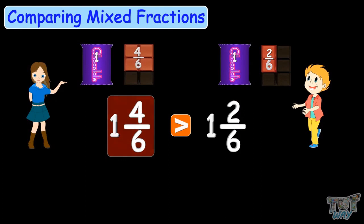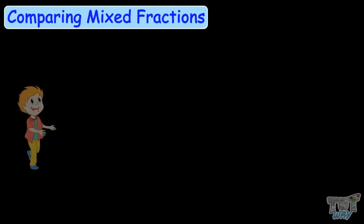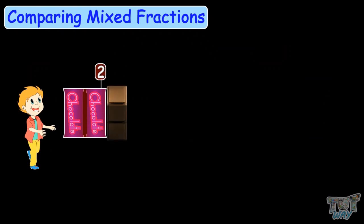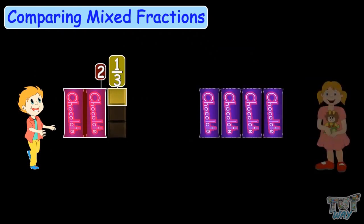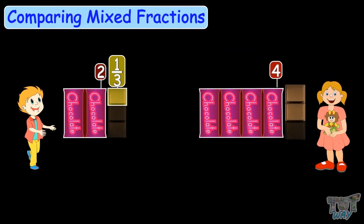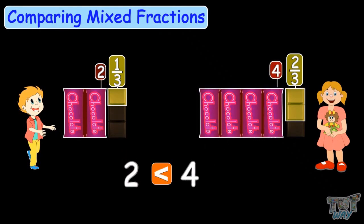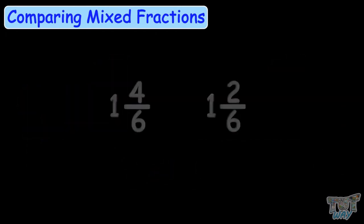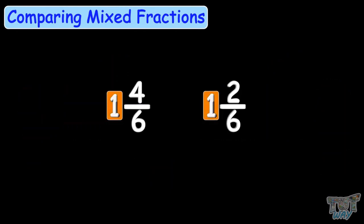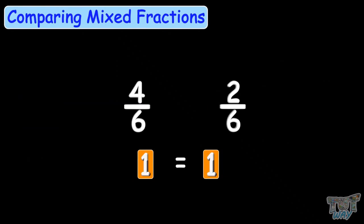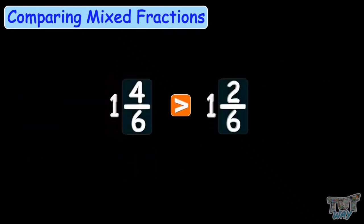Now let's compare more mixed fractions. Sam has 2 whole chocolates and 1 third chocolate. Olivia has 4 whole chocolates and a 2 third chocolate. Who got more chocolates? You can judge that the child with more whole chocolates has more — no need to compare the fraction part. For comparing mixed fractions, we first compare the whole parts, and only if the whole parts are the same do we compare the fraction portions.